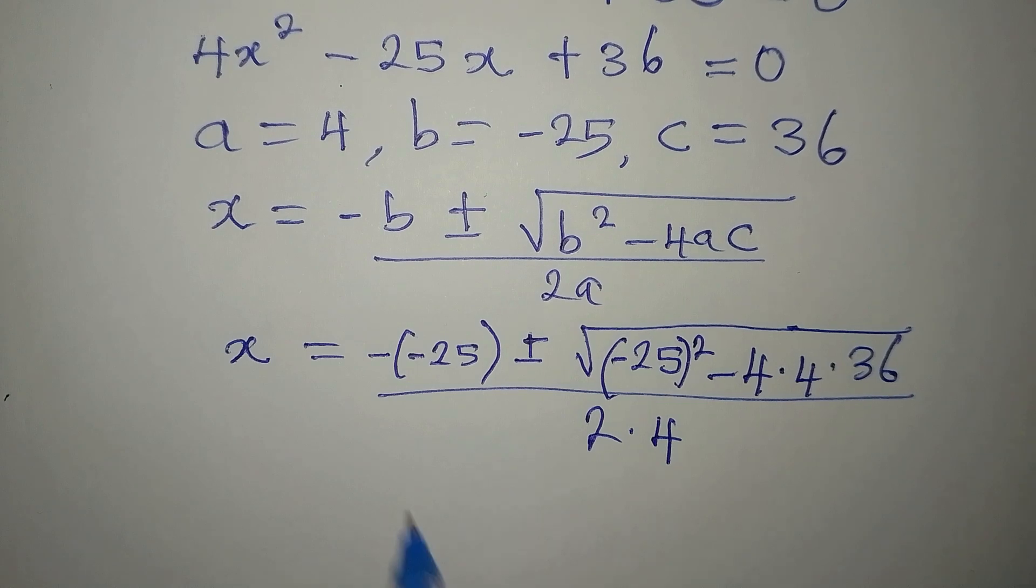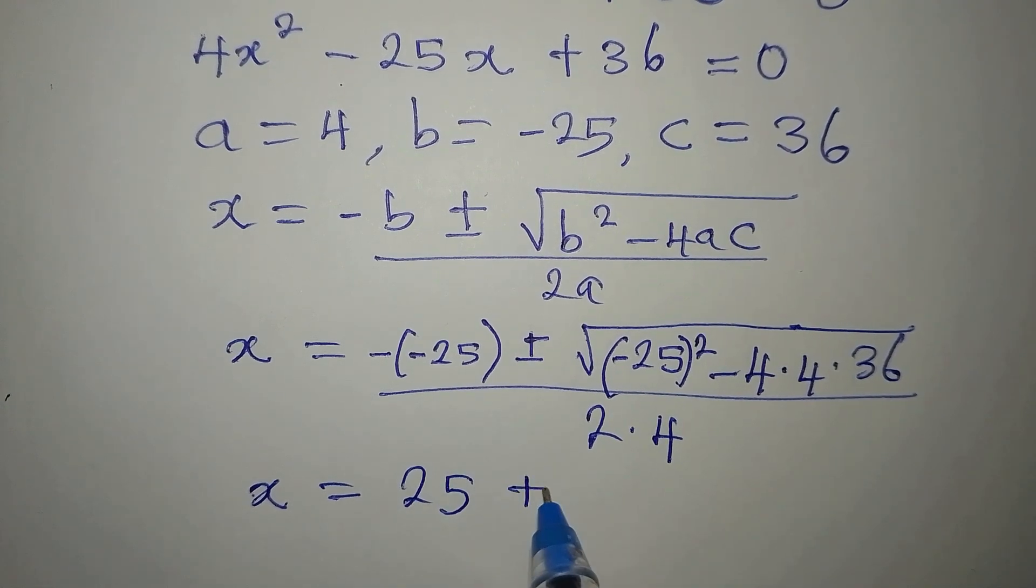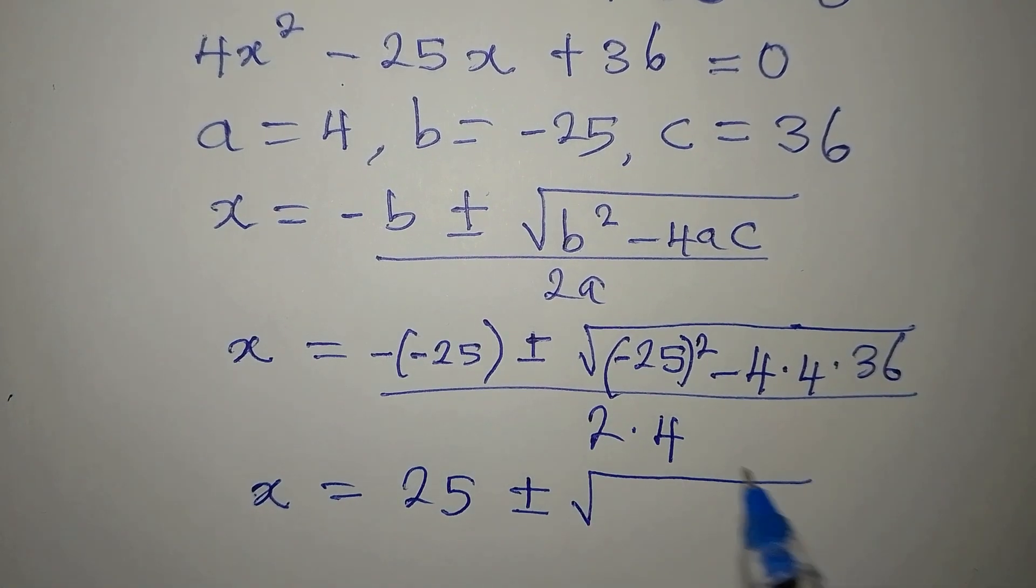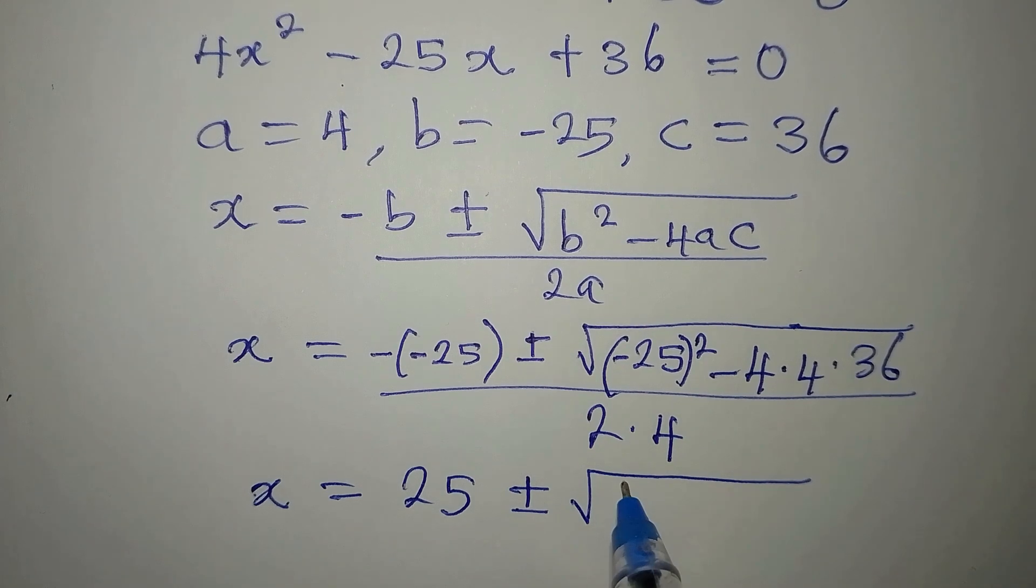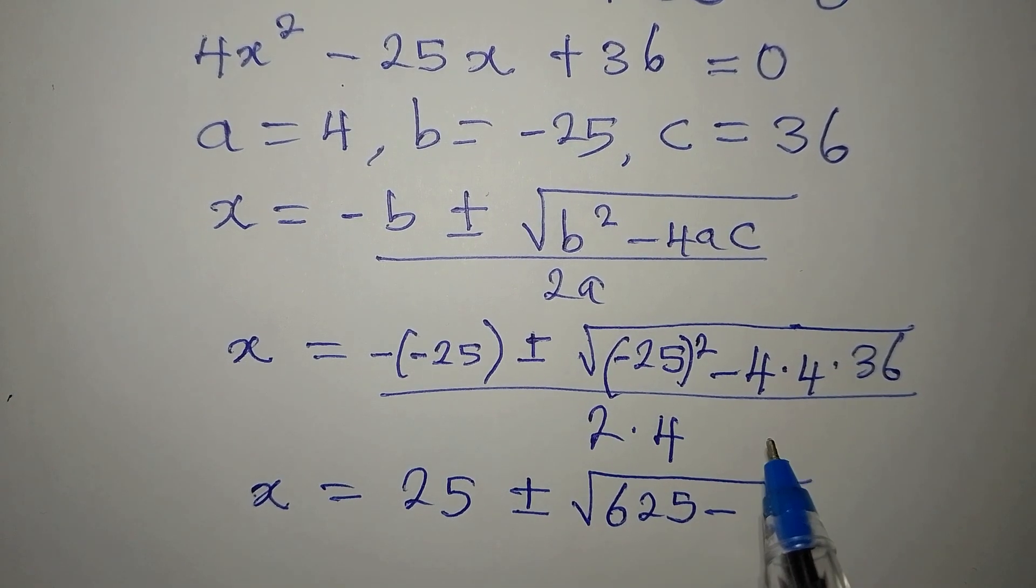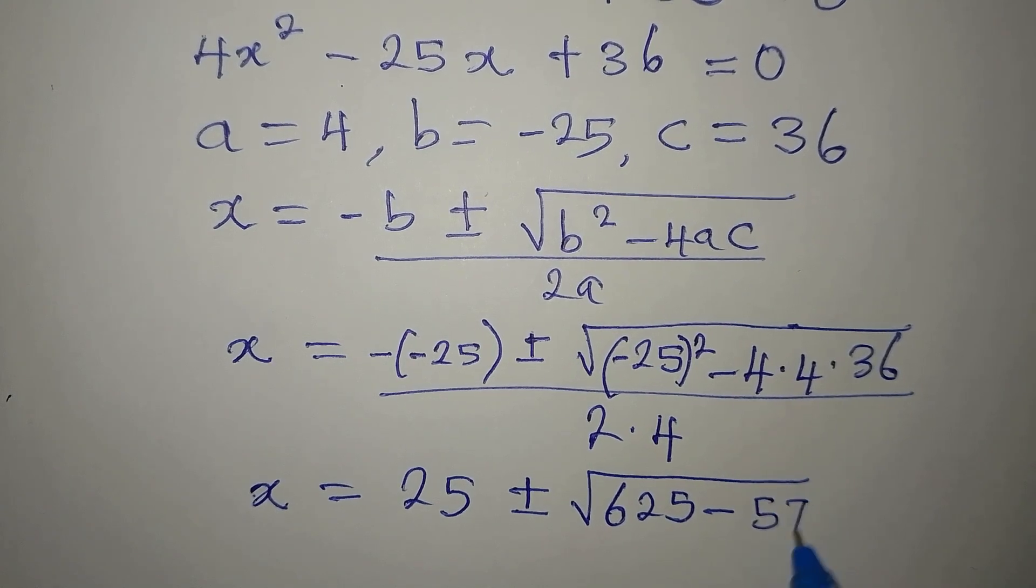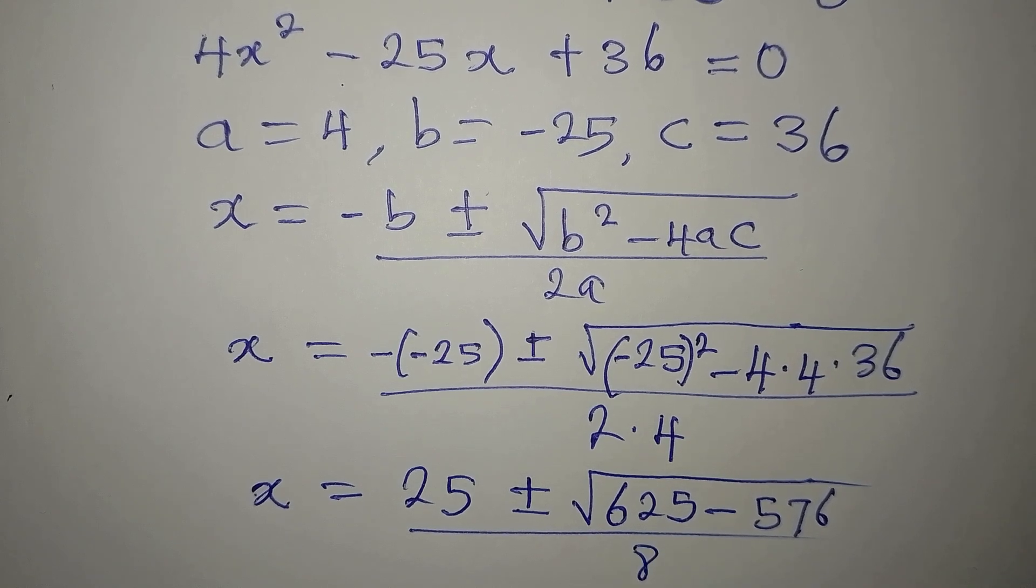So we have x to be equal to 25. Negative, negative is positive. Then we have minus 25 squared will give us 625. Minus 4 times 4 times 36 is 576. And this is divided by 8.